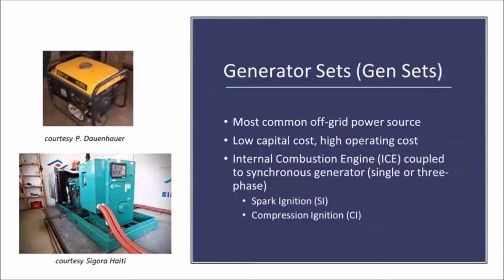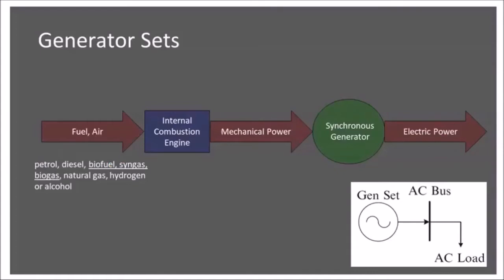There are a few different types of gensets depending on the nature of the internal combustion engine — spark ignition, as in a petrol generator, or compression ignition, as in diesel. The basics of how a genset works: we feed fuel and air into an internal combustion engine. After combustion, we get mechanical power on the engine's crankshaft, which is coupled to the generator's rotor. Rotating that rotor provides electrical power when connected to a load. Because we can regulate the flow of fuel and air, we can control the speed and directly couple the genset to an AC load.